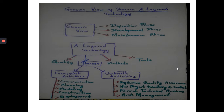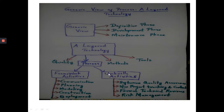Now let me introduce the concept of mind mapping. Mind mapping is not a software engineering topic — it is a study technique for easy remembrance of things. For today's topic, generic view of process layer technology, there are many headings and subheadings. You can draw a mind map: generic view covers definition phase, development phase, and maintenance phase; layer technology covers quality, process, methods, and tools; process covers framework activities and umbrella activities; framework activities include communication, planning, modeling, construction, and deployment; umbrella activities include software quality assurance, software project tracking and control, formal technical reviews, and risk management.